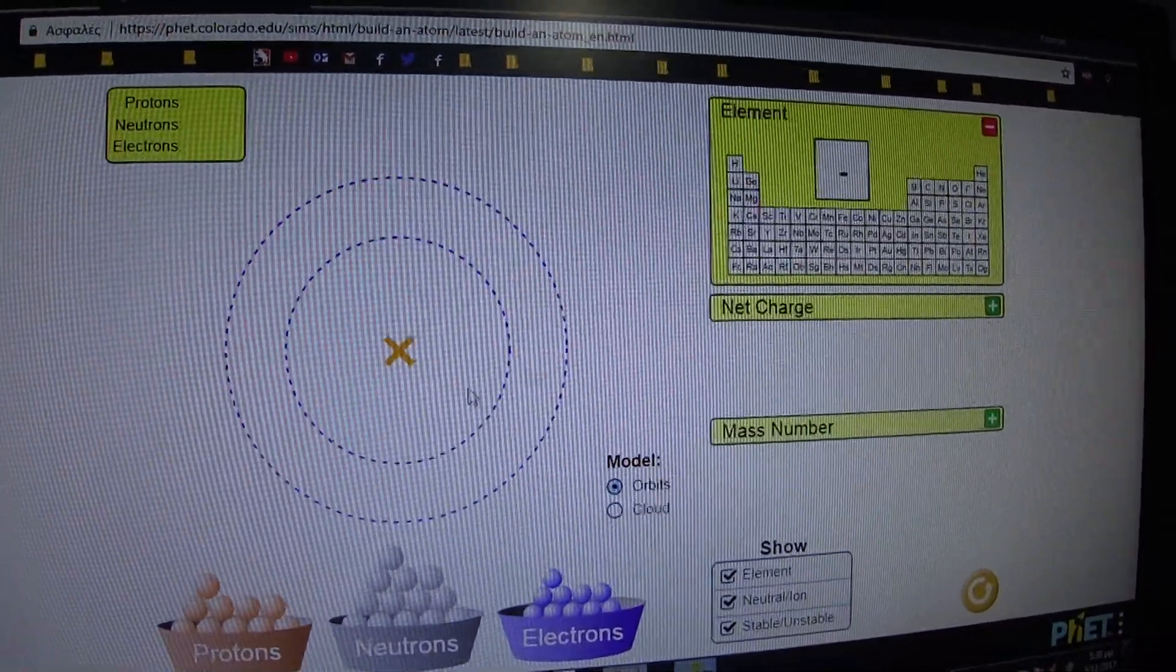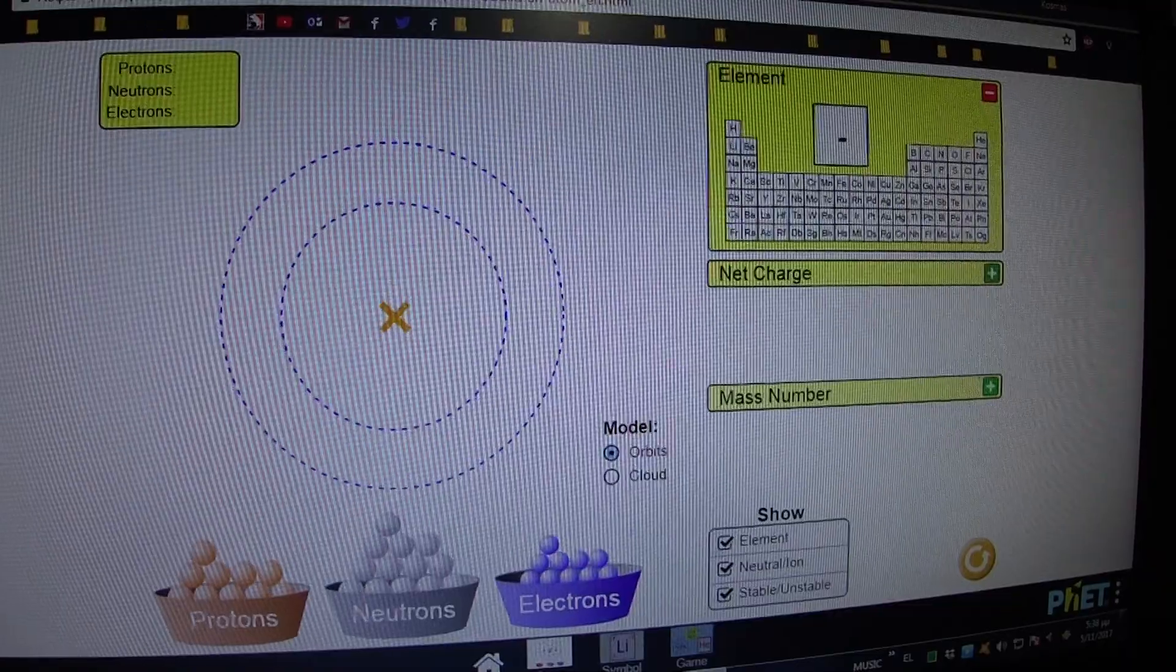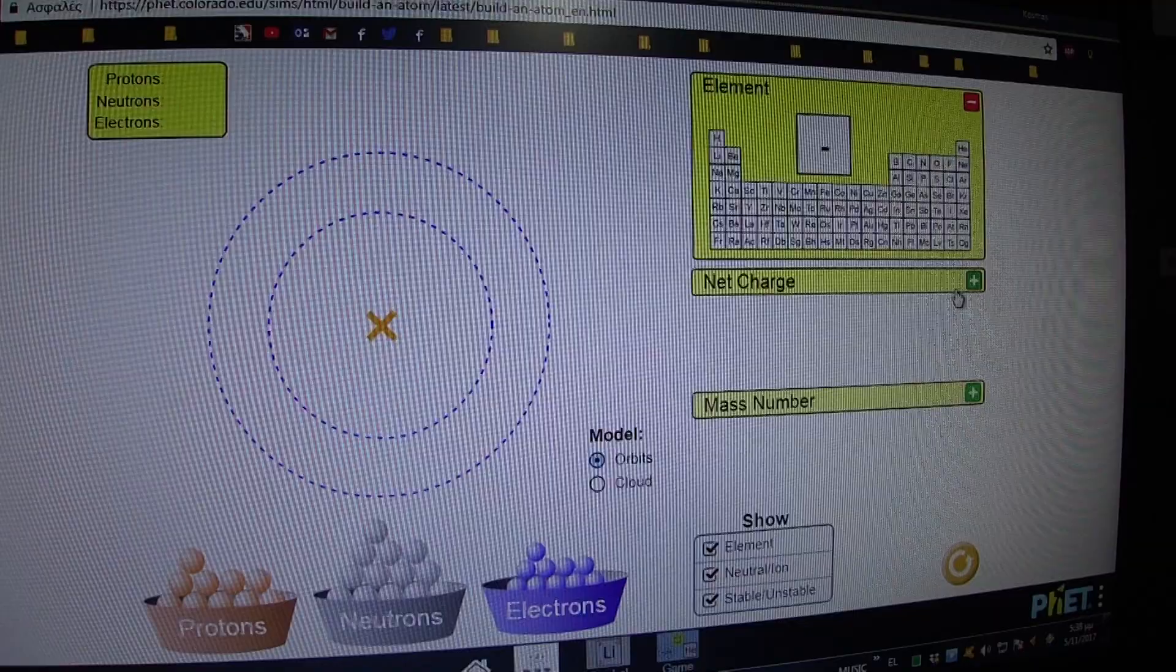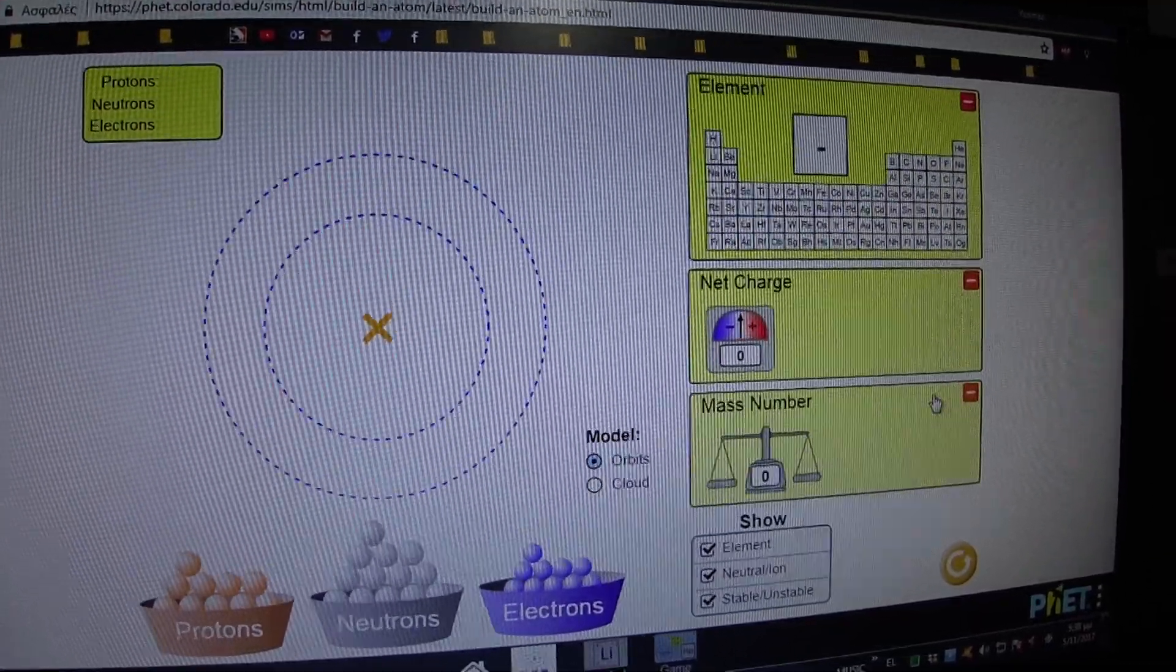This is the basic structure of an atom. Here is the periodic table of elements, the net charge, and the mass number.